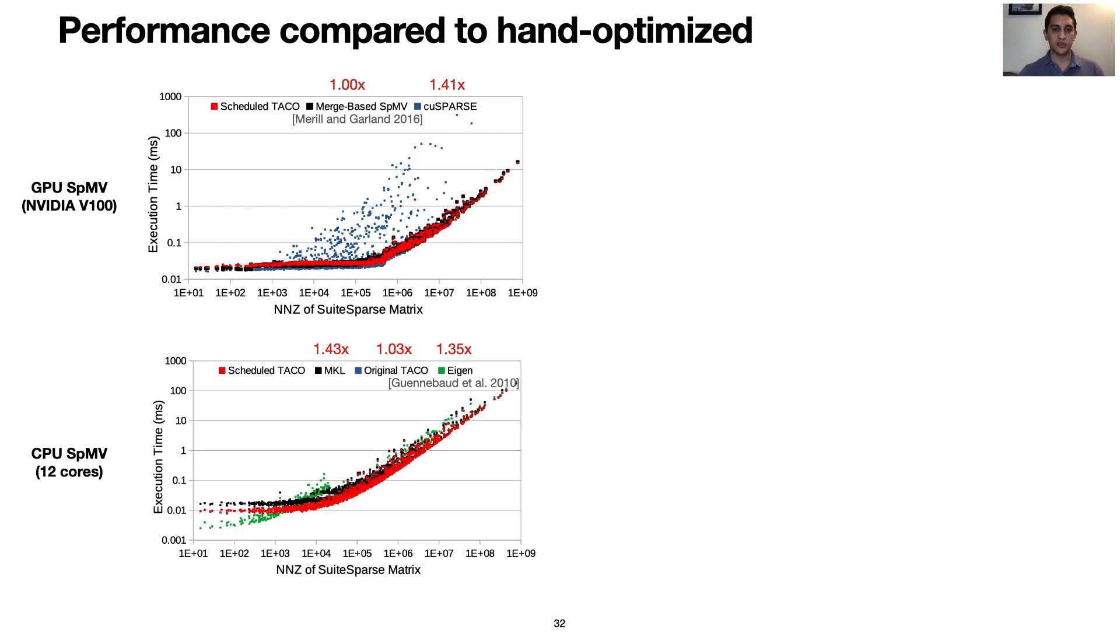A different set of transformations yields optimized CPU performance, which achieves significant speedups over the hand-optimized Intel MKL and Eigen libraries.